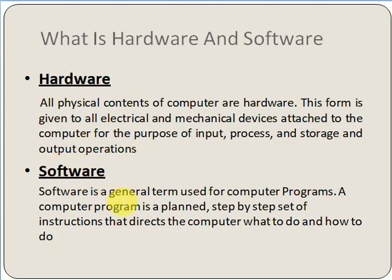Then there is software. Software is a general term used for computer programs. A computer program is a planned, step-by-step set of instructions that directs the computer what to do and how to do it.